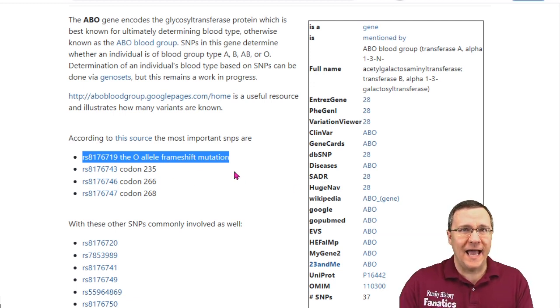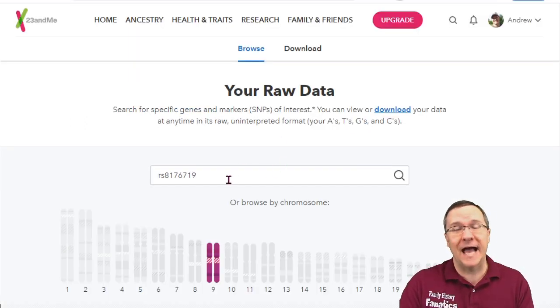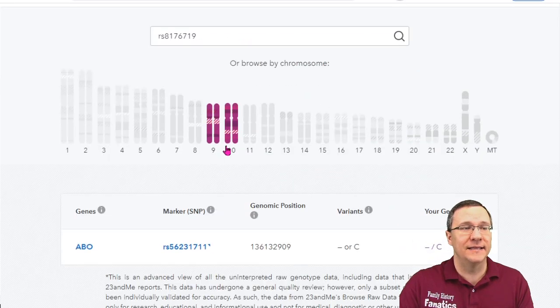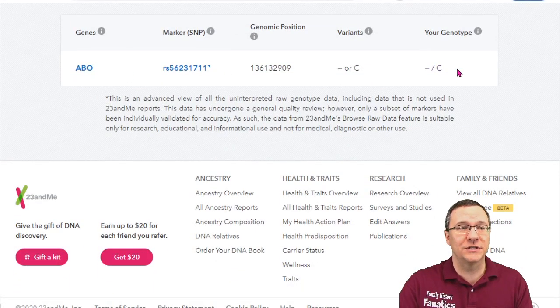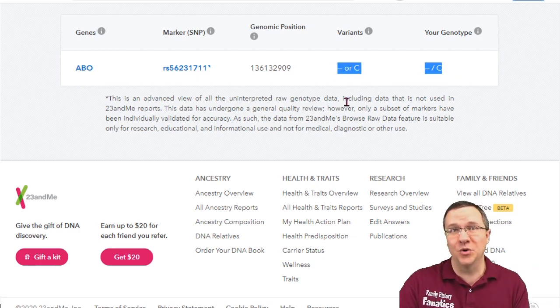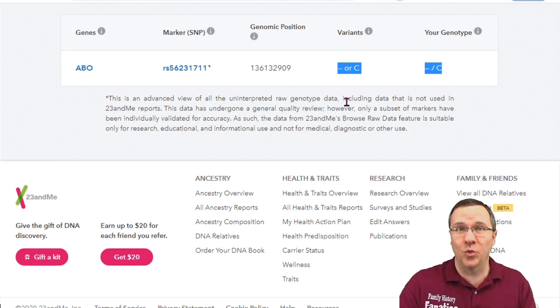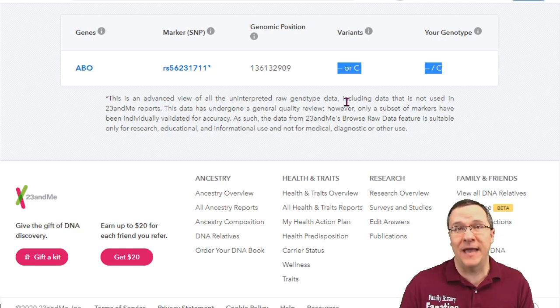So finding out whether or not the company has tested that, you're going to have to search through the raw data. 23andMe makes that easy for you. I can just put that SNP in and it's going to look and tell me this is on chromosome number nine and here is your SNP information. It says it can have either a deletion or a letter C. And in my case, I have a deletion on one of my chromosomes and a C on the other chromosome, which means I have blood type A because I have an A and an O.